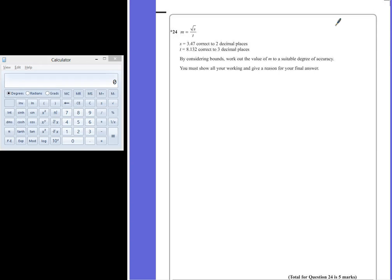Question 24. M equals the square root of s divided by t, where s is equal to 3.47 correct to two decimal places, and t is equal to 8.132 correct to three decimal places. By considering bounds, work out the value of m to a suitable degree of accuracy. You must show all your working and give a reason for your final answer.